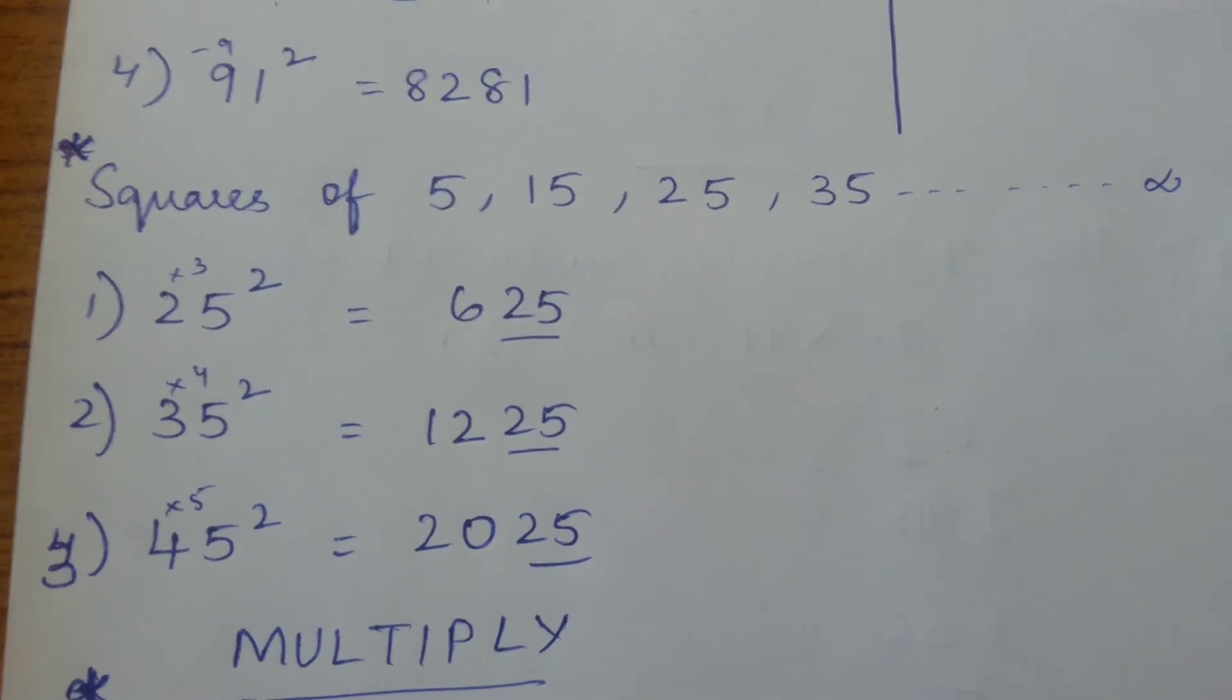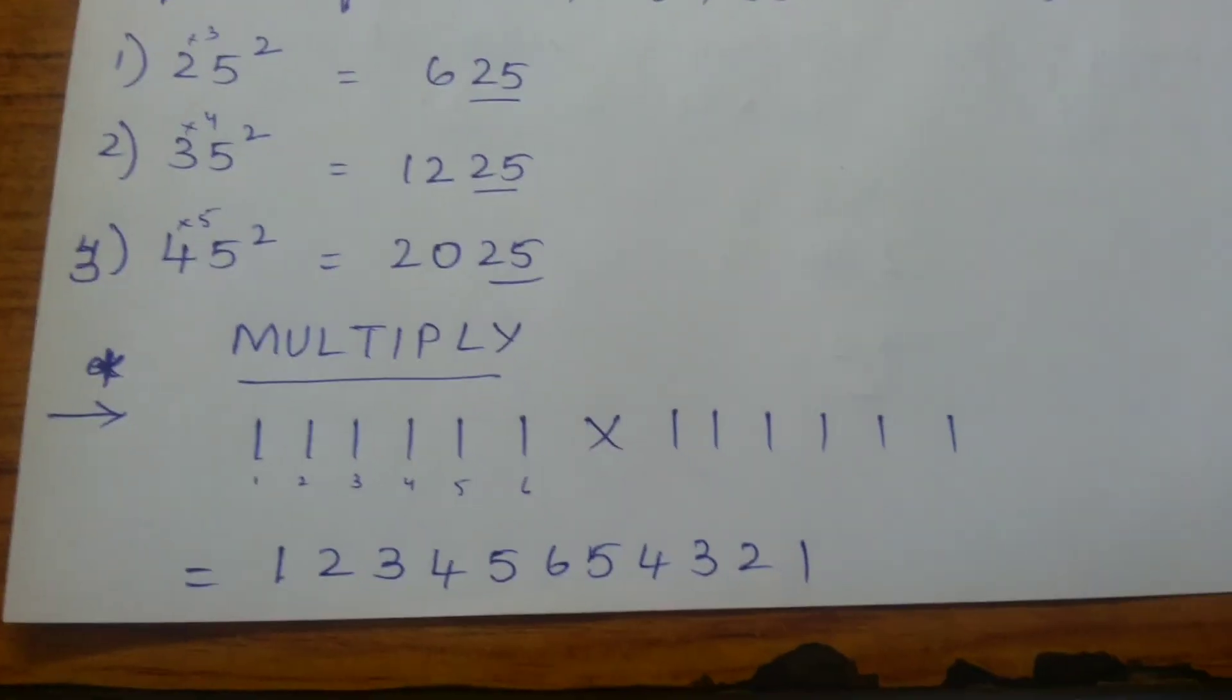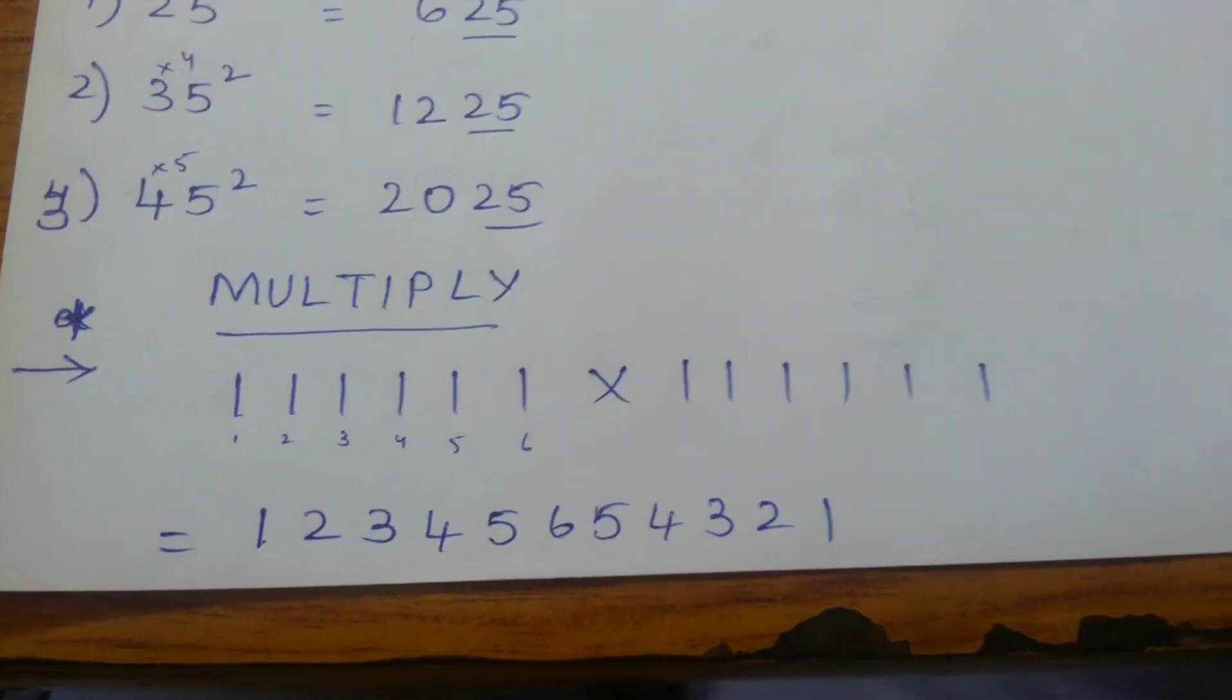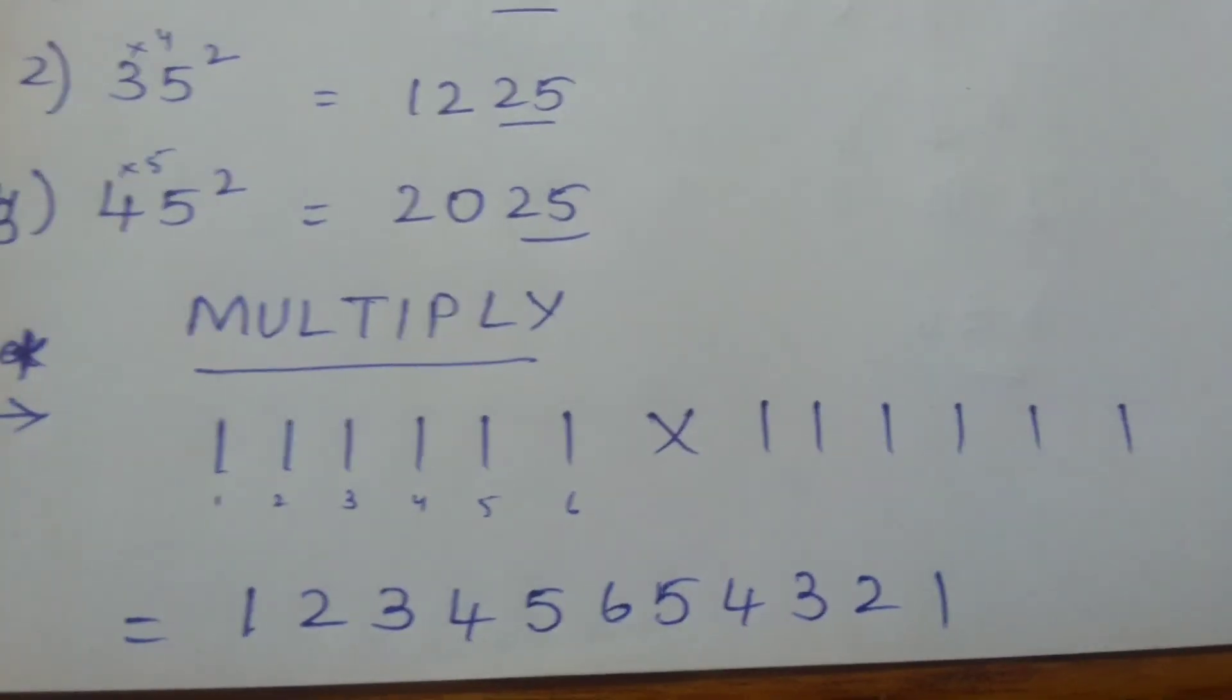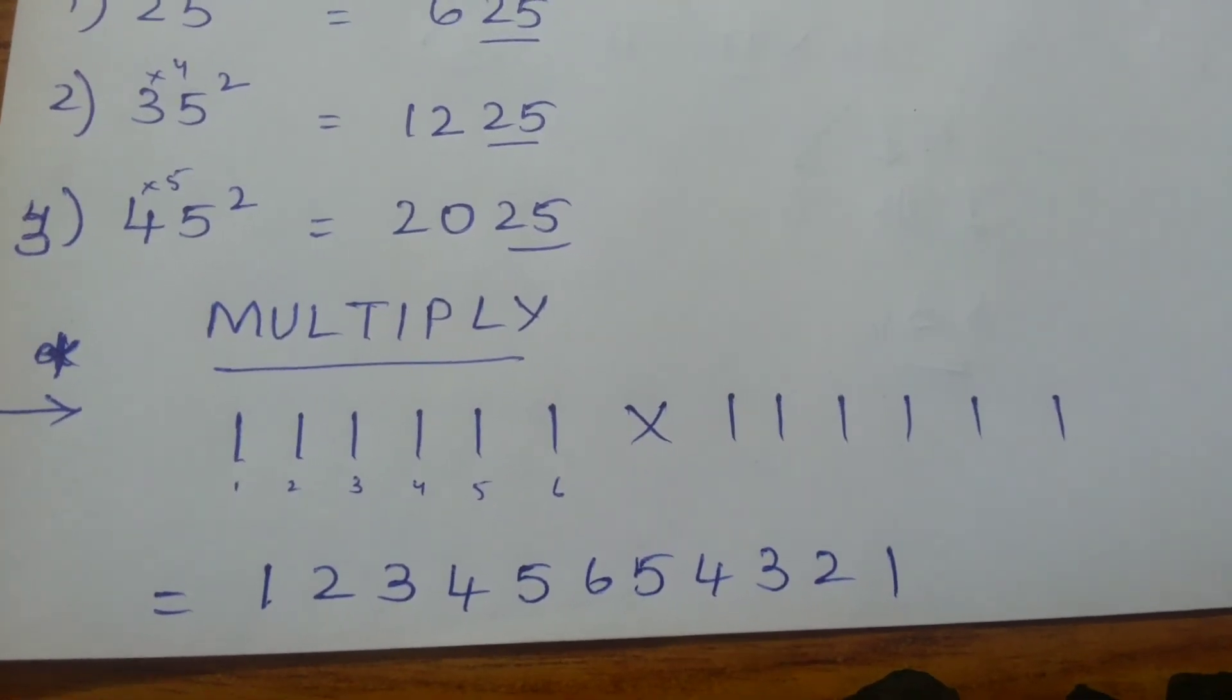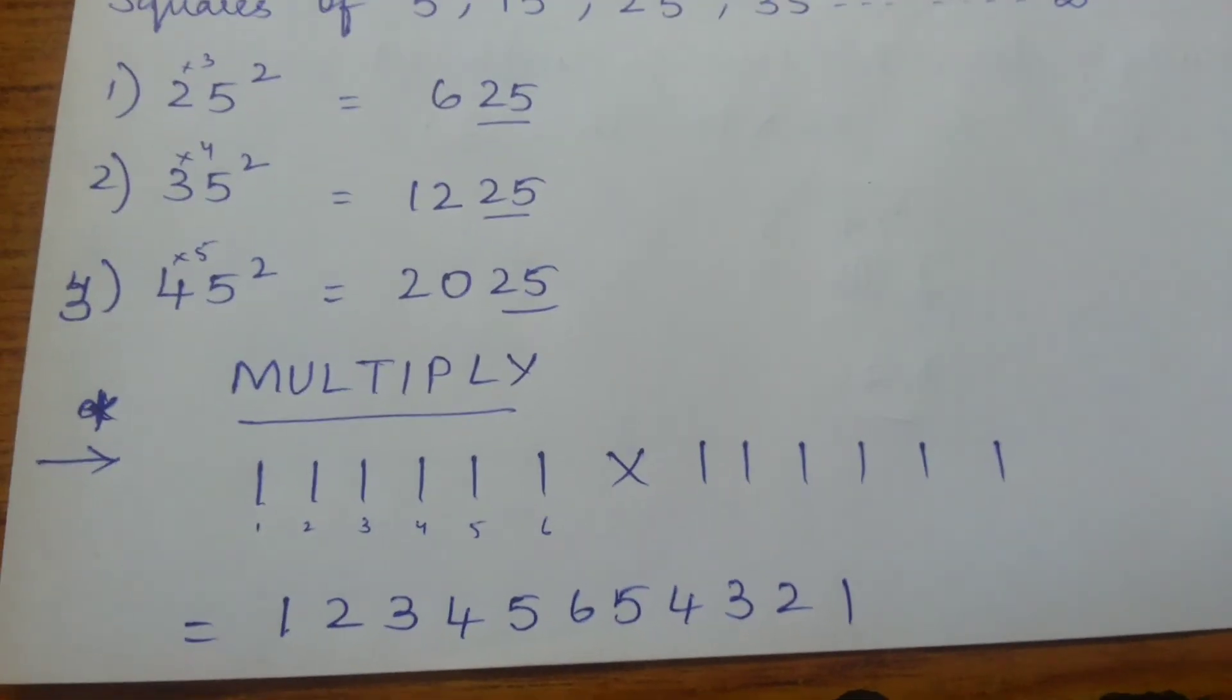Now here's another trick: multiply 6 ones by 6 ones. If you get such a question, identify how many ones there are. There are 6 ones here, so I write the answer starting from 1 2 3 4 5 6, and then decrement: 5 4 3 2 1, which gives you the answer.